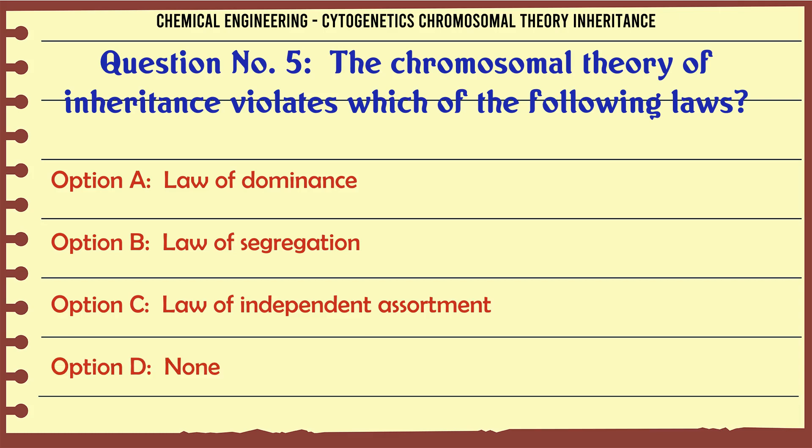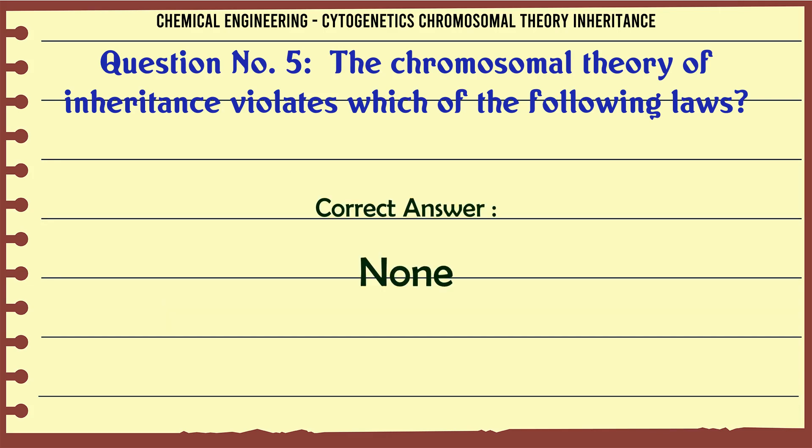The chromosomal theory of inheritance violates which of the following laws? A: Law of dominance. B: Law of segregation. C: Law of independent assortment. D: None. The correct answer is None.